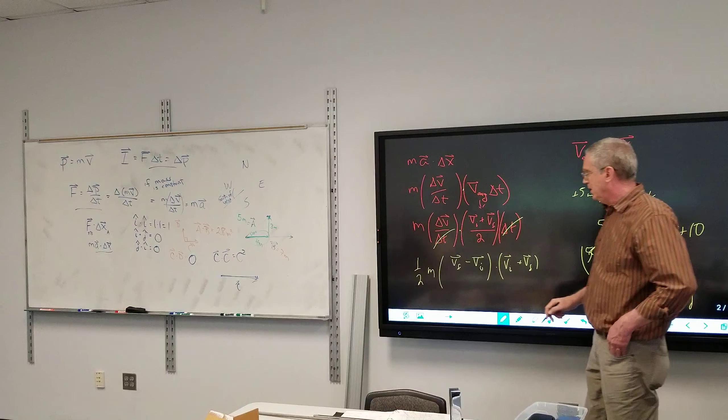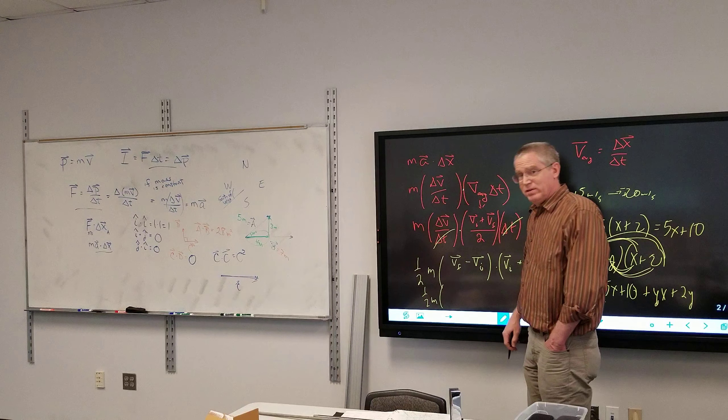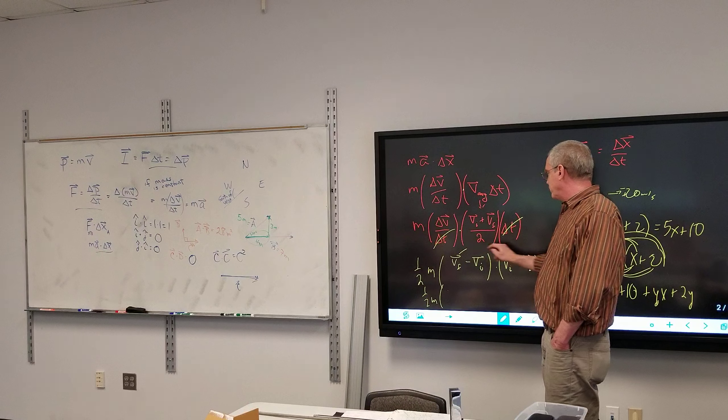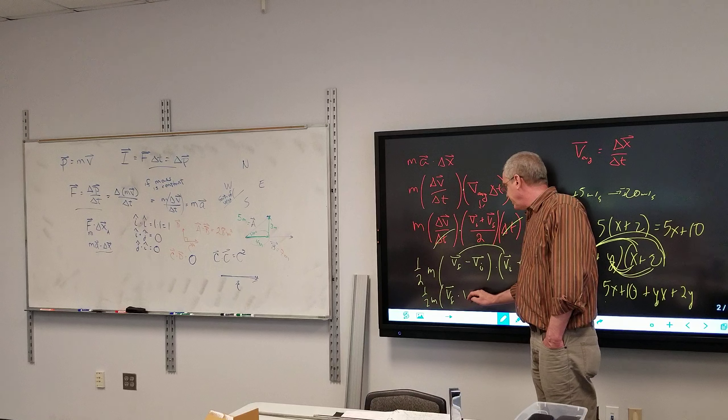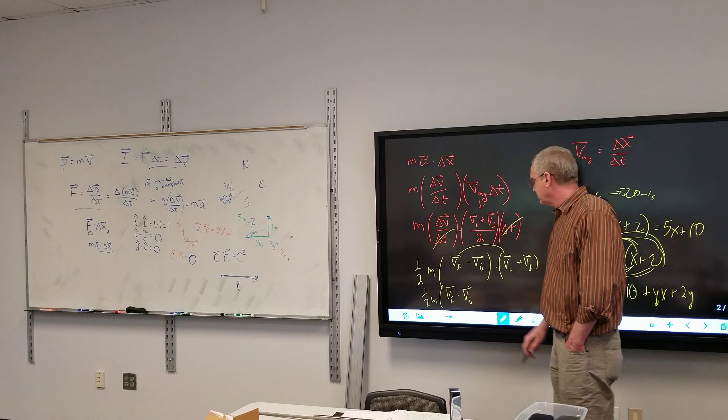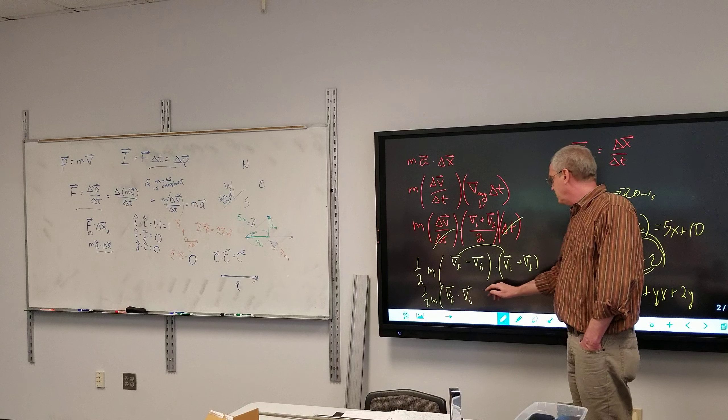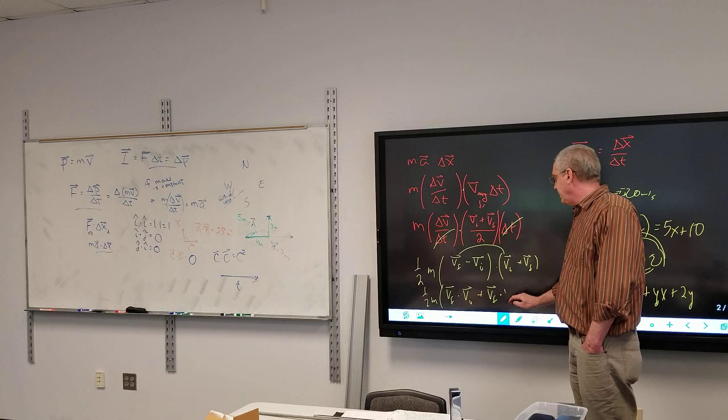We're going to do the same thing here. Multiply the first ones together so I have VF minus VI times VI, still a dot product. Then the last ones plus VF dot VF.